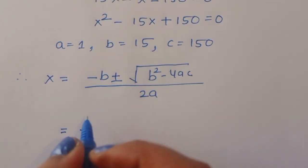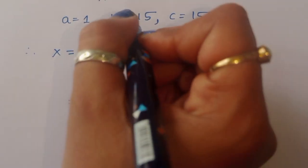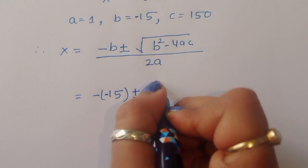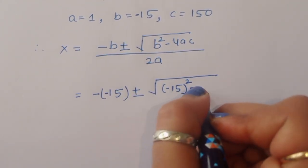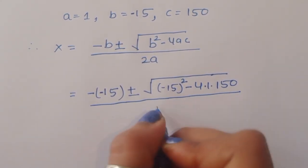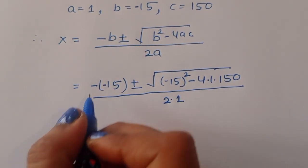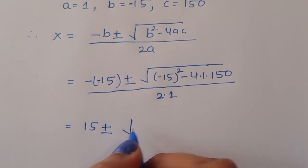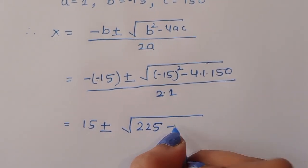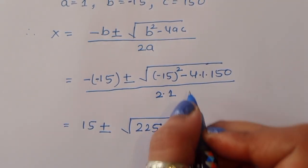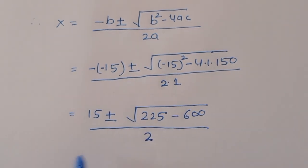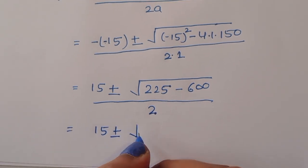Since b is minus 15, we get x equals minus(minus 15) plus or minus square root of ((minus 15) squared minus 4 times 1 times 150) divided by 2 times 1. That is 15 plus or minus square root of (225 minus 600) divided by 2.